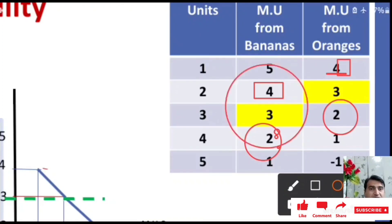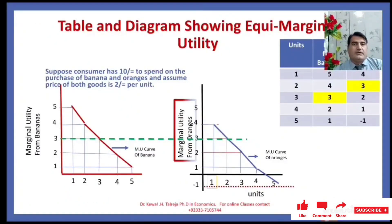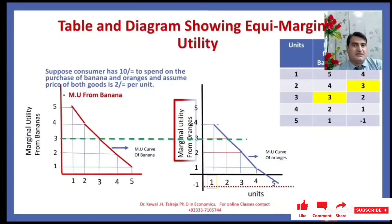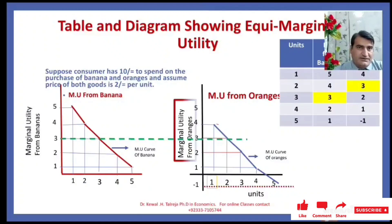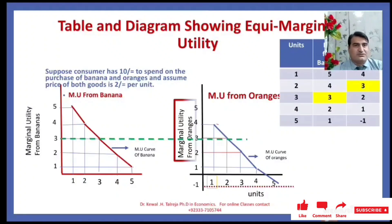The table can be converted into a graph. The marginal utility from bananas shows: first unit gives 5, second gives 4, third gives 3, fourth gives 2, and the fifth gives 1. The dotted red line shows the consumer is in equilibrium with three units of banana and two units of orange, where marginal utility from bananas as well as from oranges is 3. So the consumer is said to be in equilibrium and gets the optimum level of satisfaction.